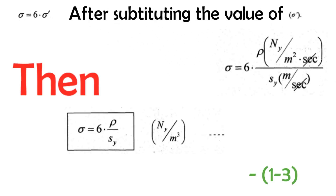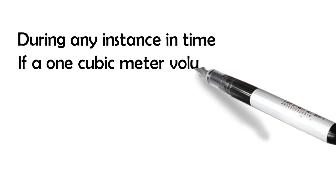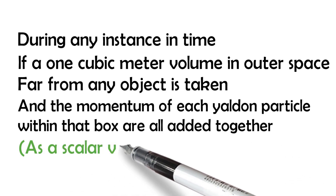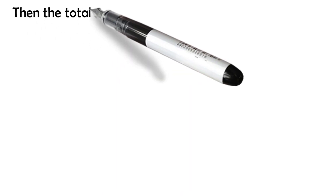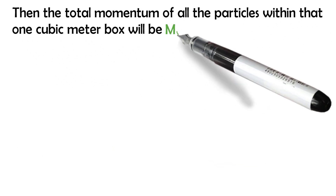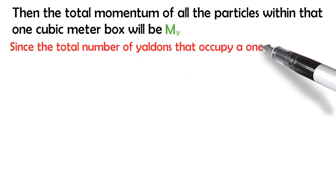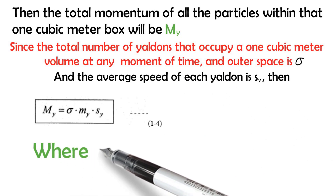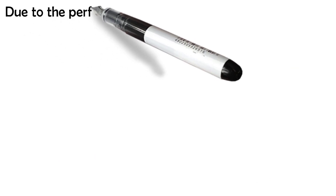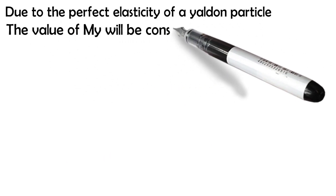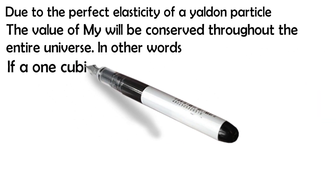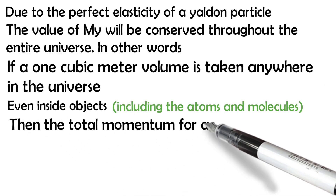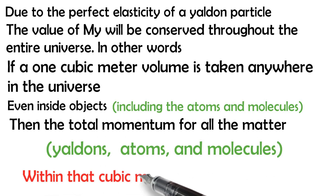After substituting, during any instance in time, if a one cubic meter volume in outer space far from any object is taken and the momentum of each Yaldon particle within the box are all added together as a scalar value regardless of direction, then the total momentum of all the particles within that one cubic meter box will be MY. Since the total number of Yaldons occupying a one cubic meter volume at any moment in outer space is sigma, and the average speed of each Yaldon is SY, where MY is the mass of a single Yaldon particle, the value of MY will be conserved throughout the entire universe.